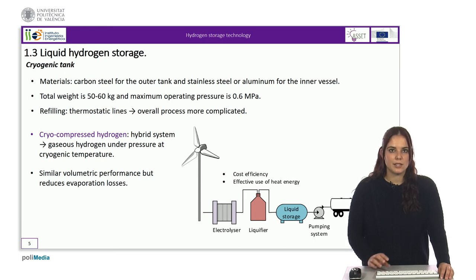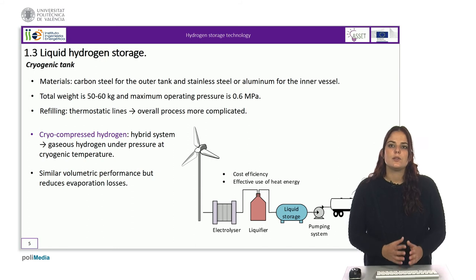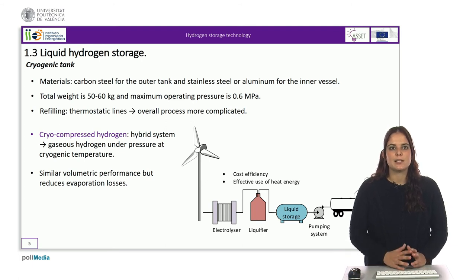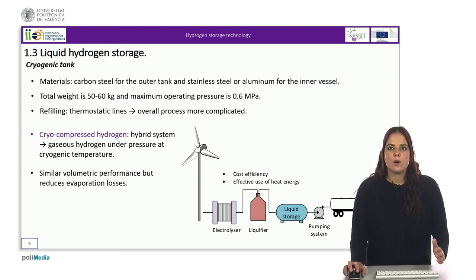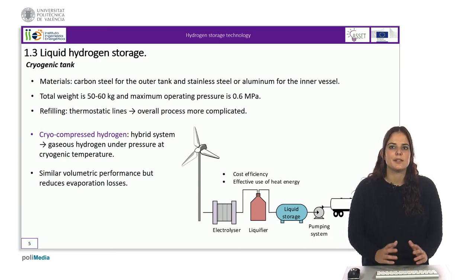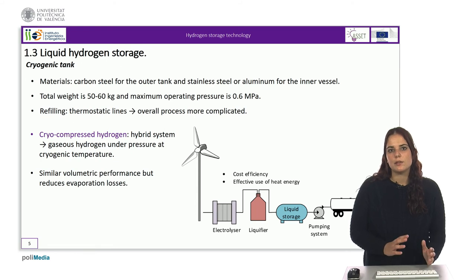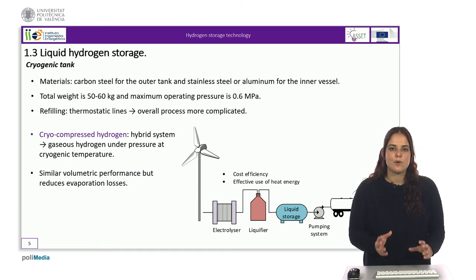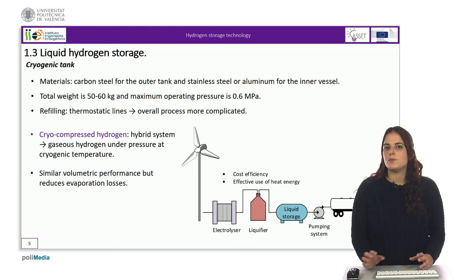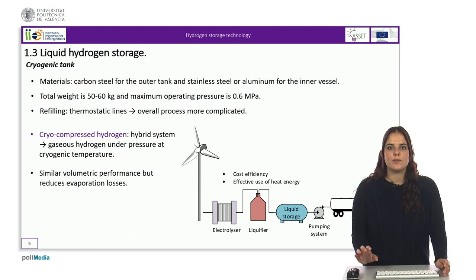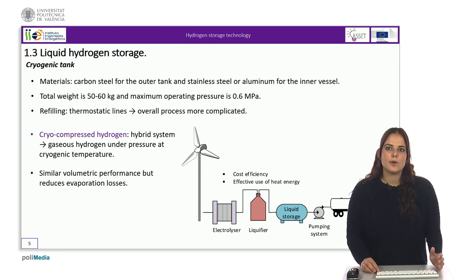In cryogenic tanks, isolation often involves the use of a second vessel around the tank. The supporting structures and interconnections between the vessels must allow and support the contraction and expansion that will occur each time the vessel is filled and emptied. The complexity of this structure increases as the tanks become larger. The materials used are carbon steel for the outer tank and stainless steel or aluminium for the inner vessel, as well as for other connections. Insulating layers can be placed between the two vessels, although this can increase heat transfer by conduction compared to vacuum. The total weight of this type of tank is around 50 to 60 kg and the maximum operating pressure is 0.6 MPa.